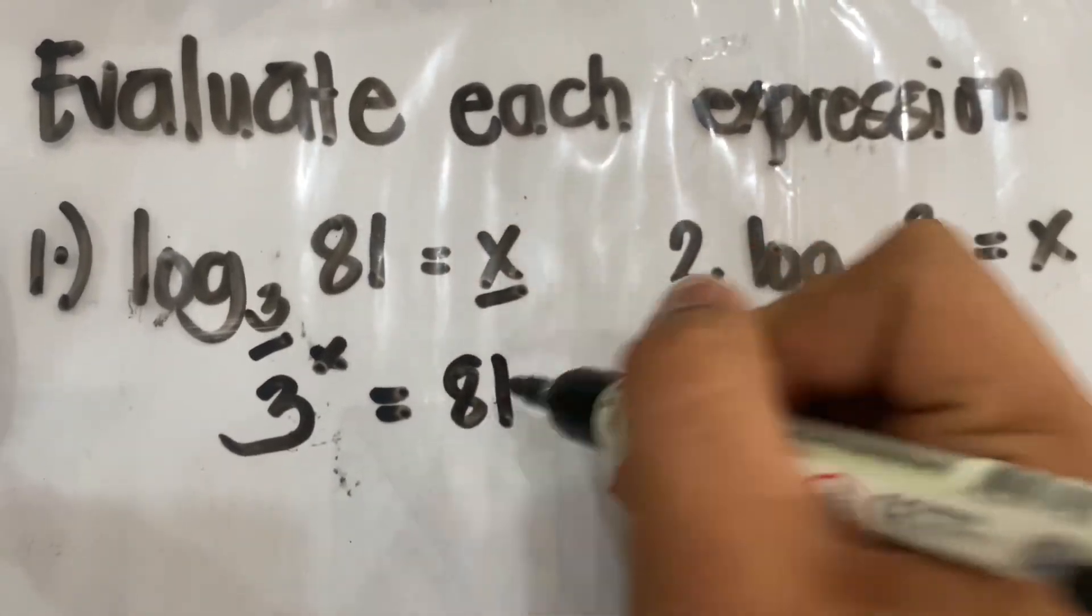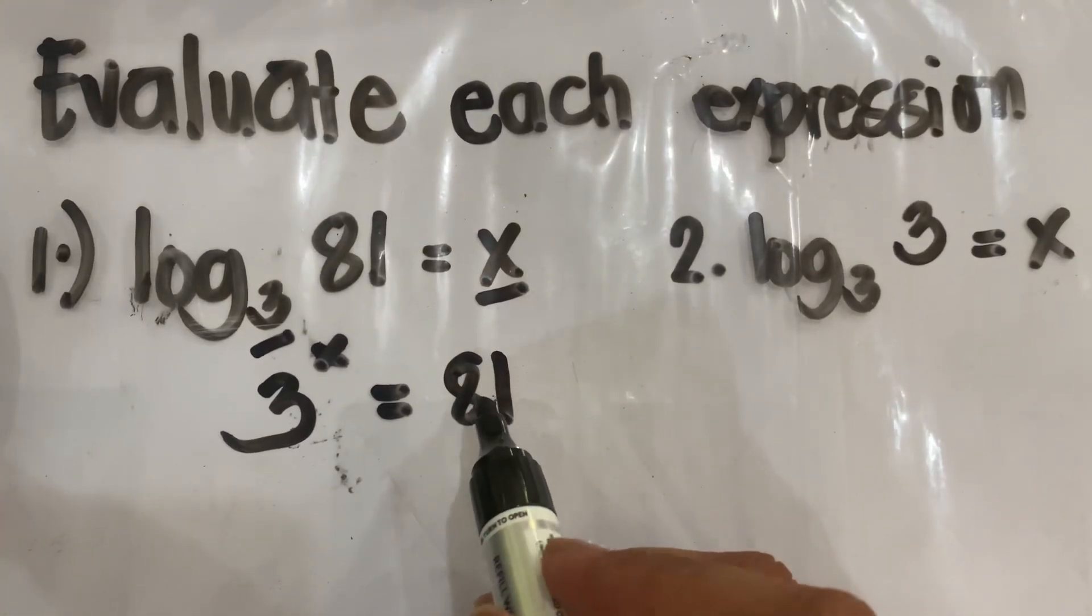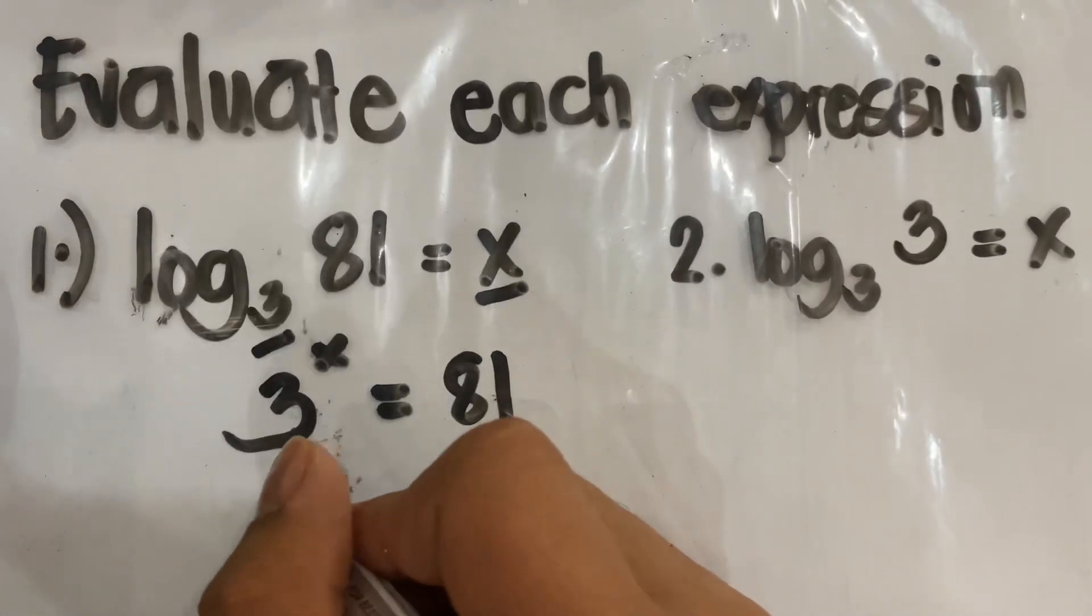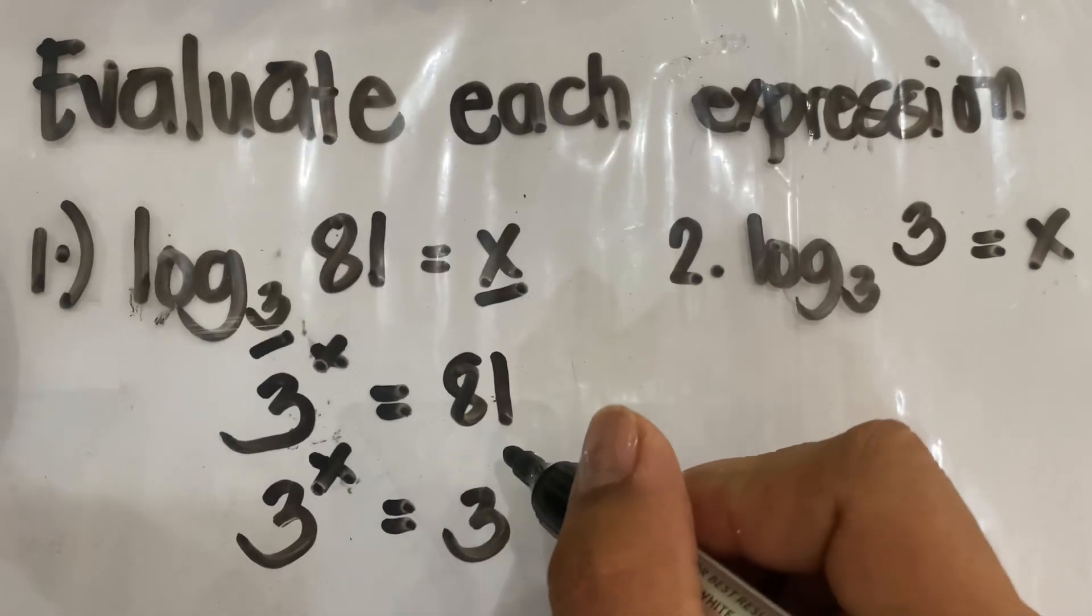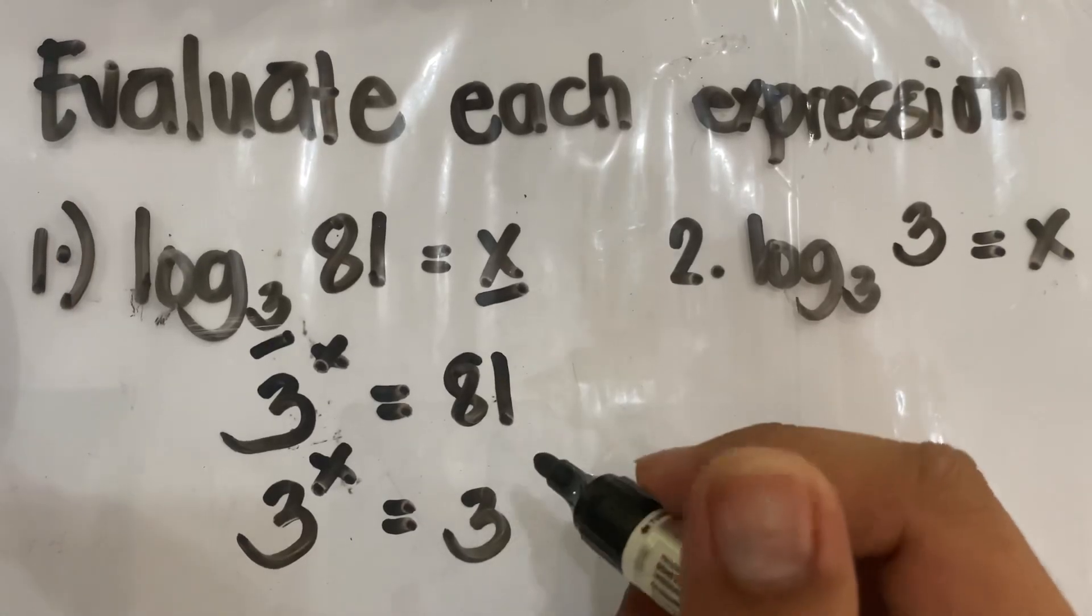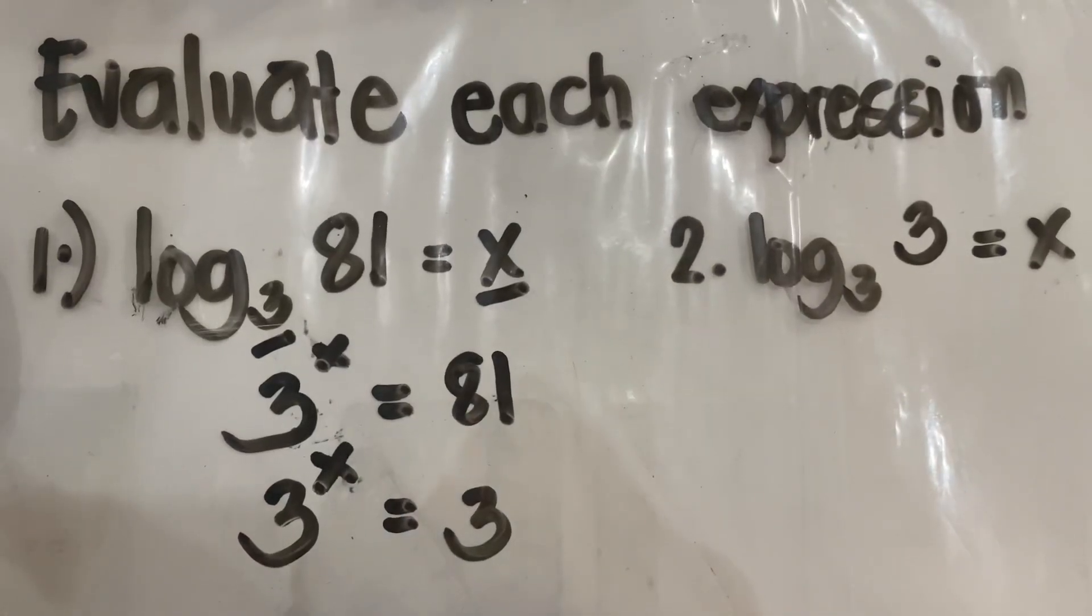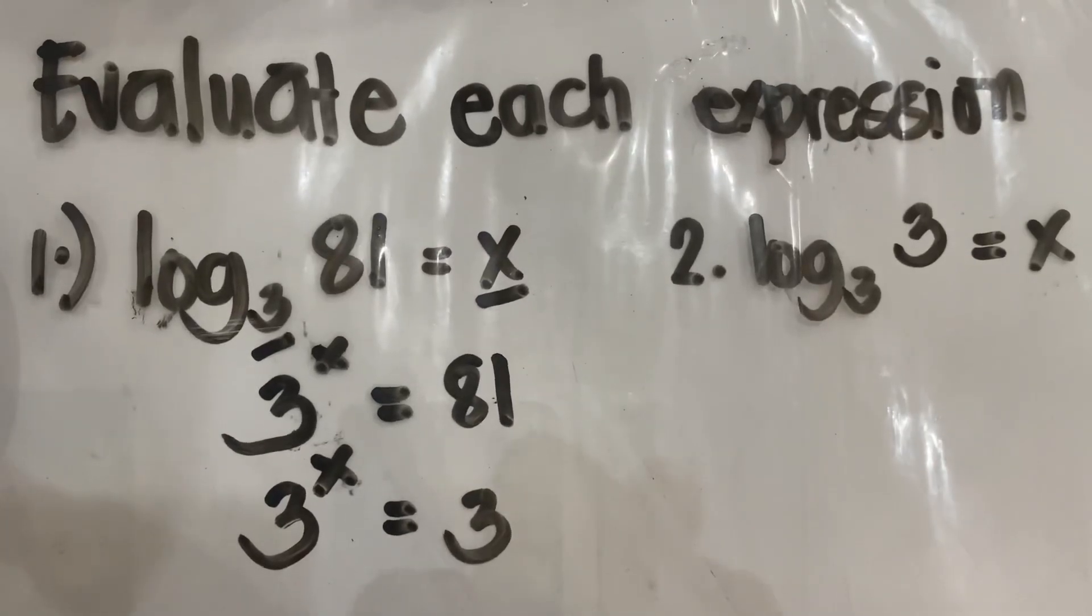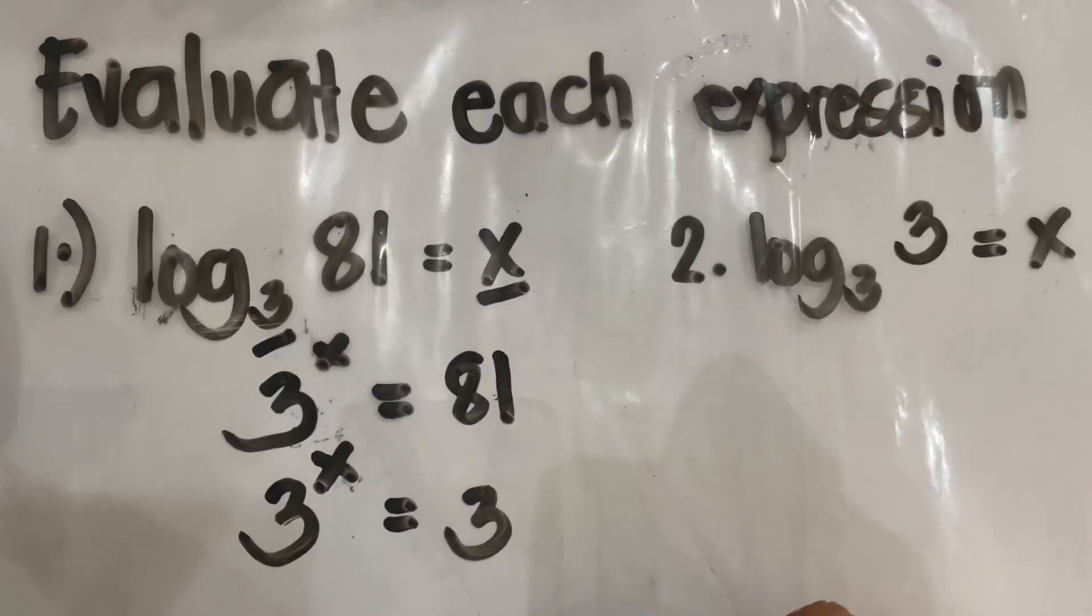That in order to solve for this, we have to transform 81 where its base should be 3. So that would be 3 to the power of x equals 3 to the power of how many times we have to multiply 3 in order to make it become 81. So if we have here 3 times 3 times 3, that will be 9, times 3, that will be 27, times 3, that's 81.